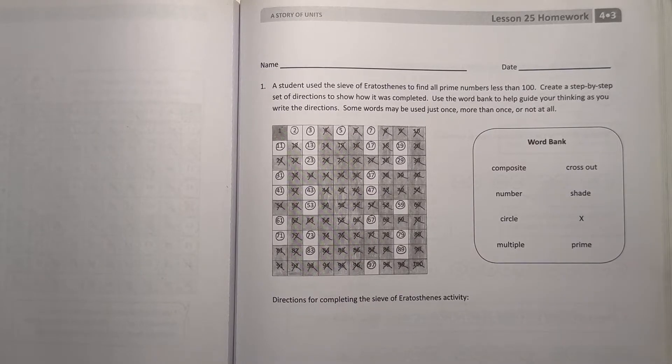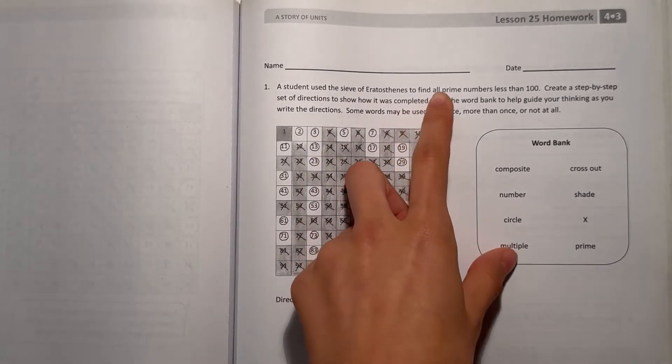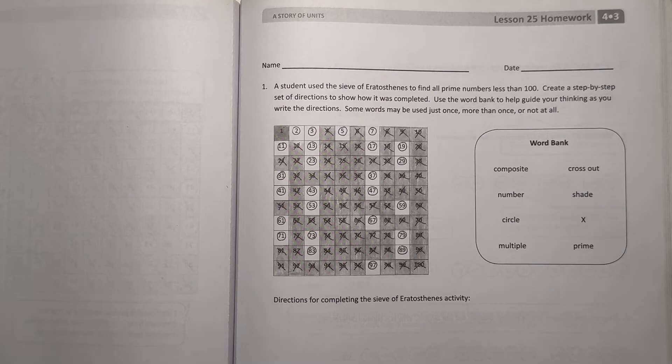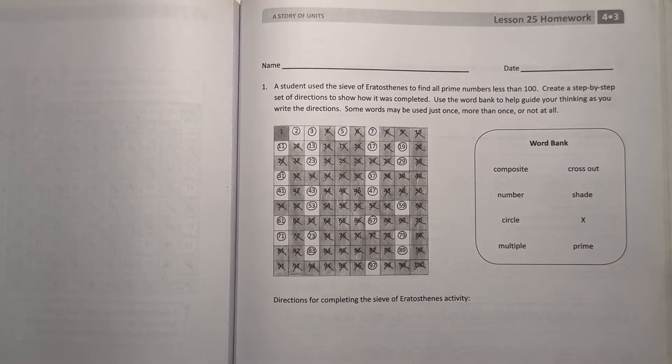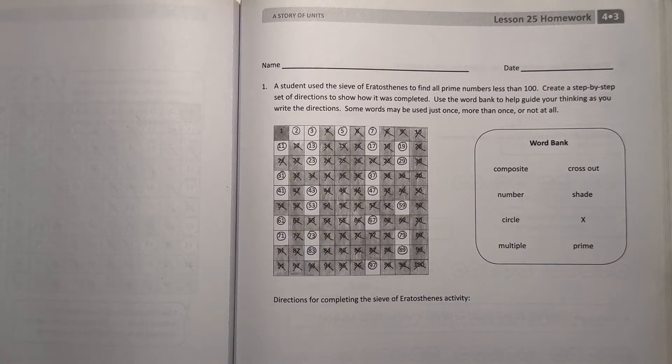A student used a sieve of Eratosthenes to find all prime numbers less than 100. Create a step-by-step set of directions to show how it was completed. Use the word bank to help guide your thinking as you write the directions. Some words may be used just once, more than once, or not at all.